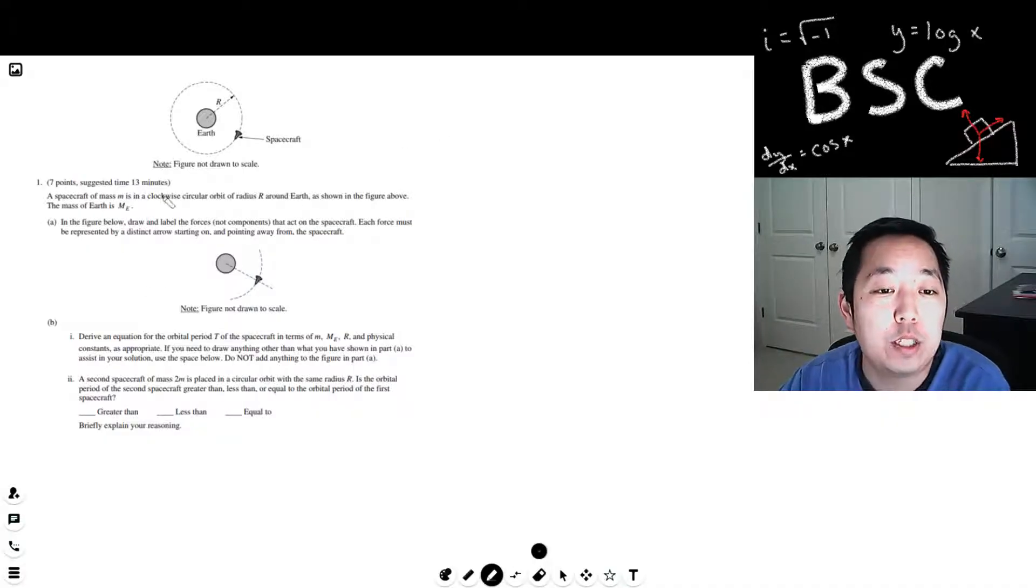So number one: the spacecraft of mass M is moving. M is moving in a figure, the mass of the earth is ME. In the figure below, draw and label the forces, not components, that act on the spacecraft. Each force must be represented by a distinct arrow pointing on and pointing away from the spacecraft. Okay, this is pretty easy.